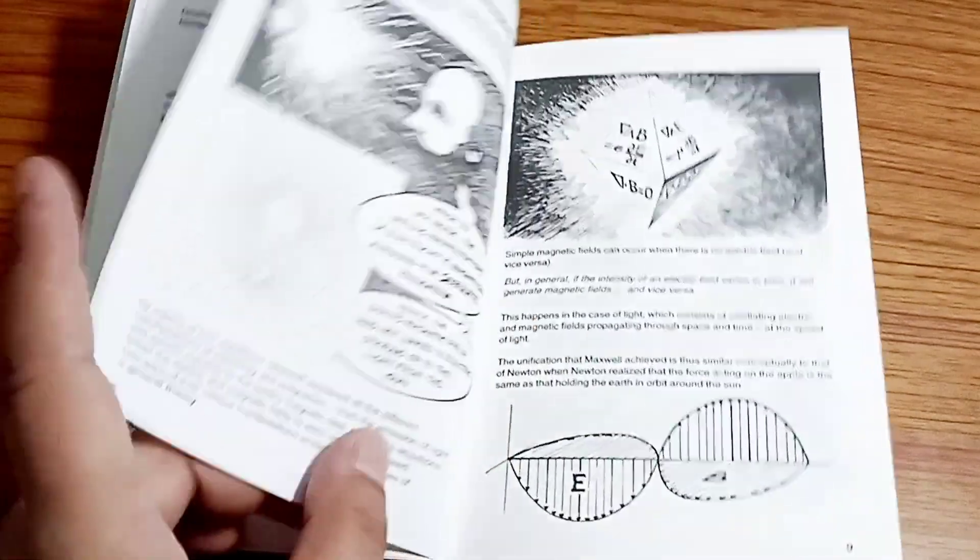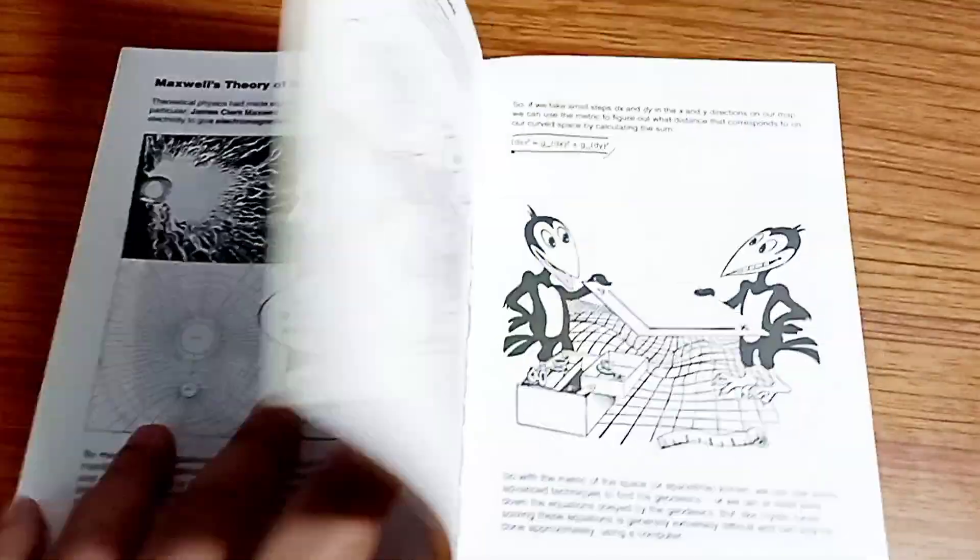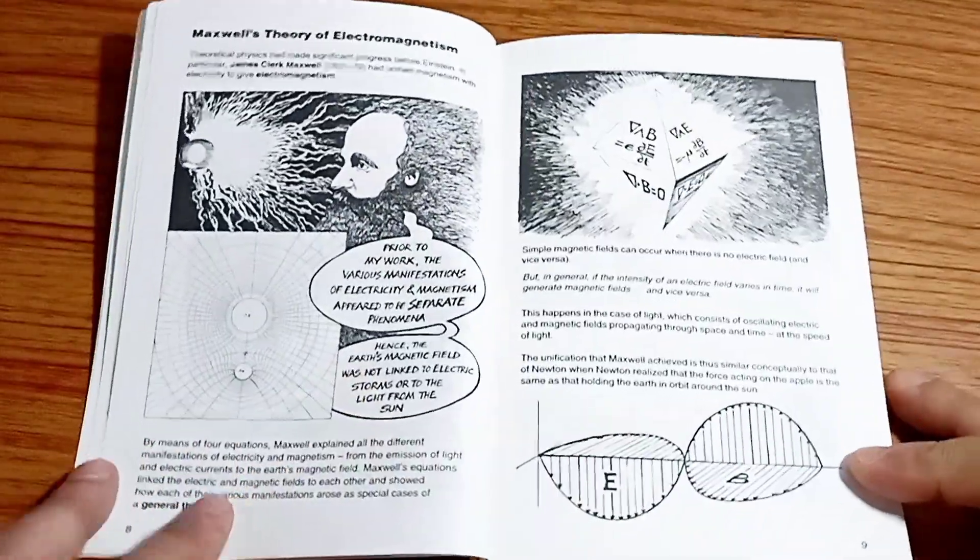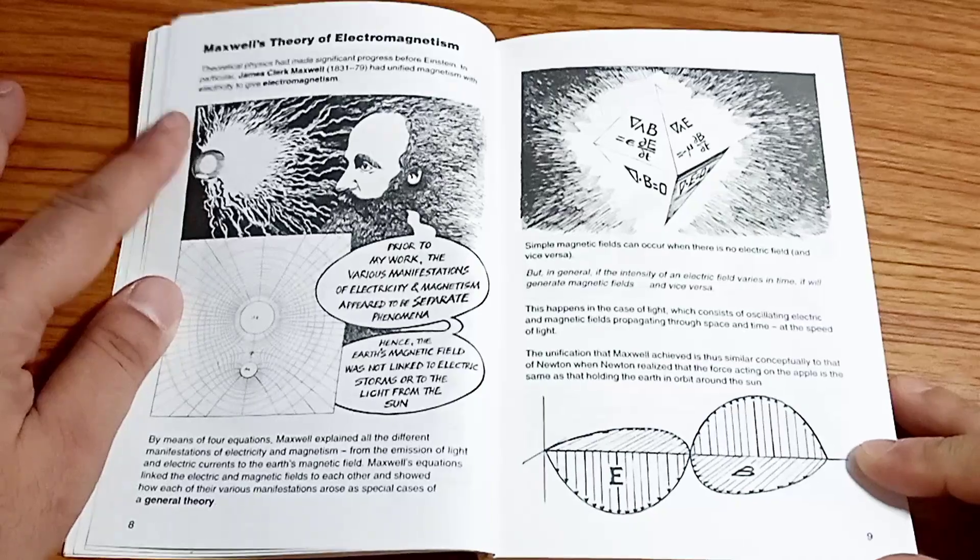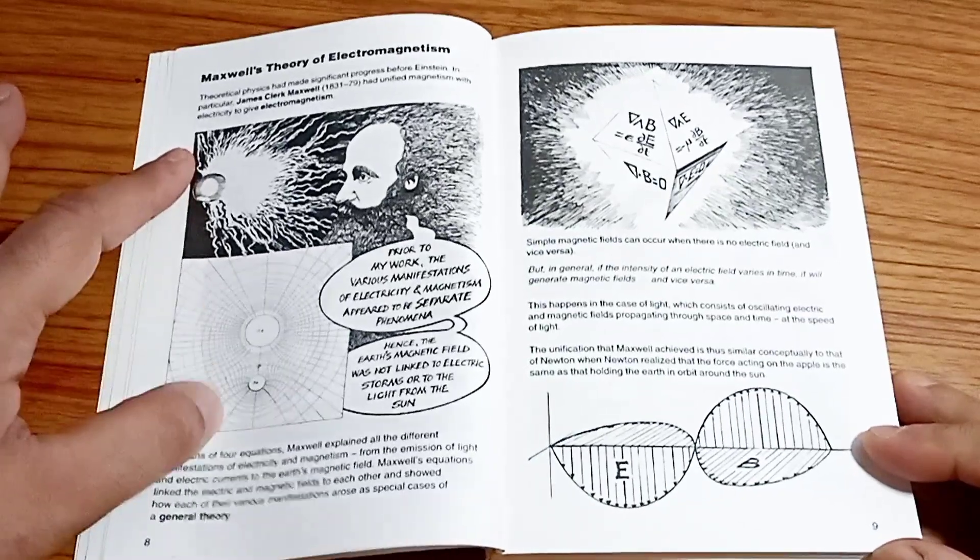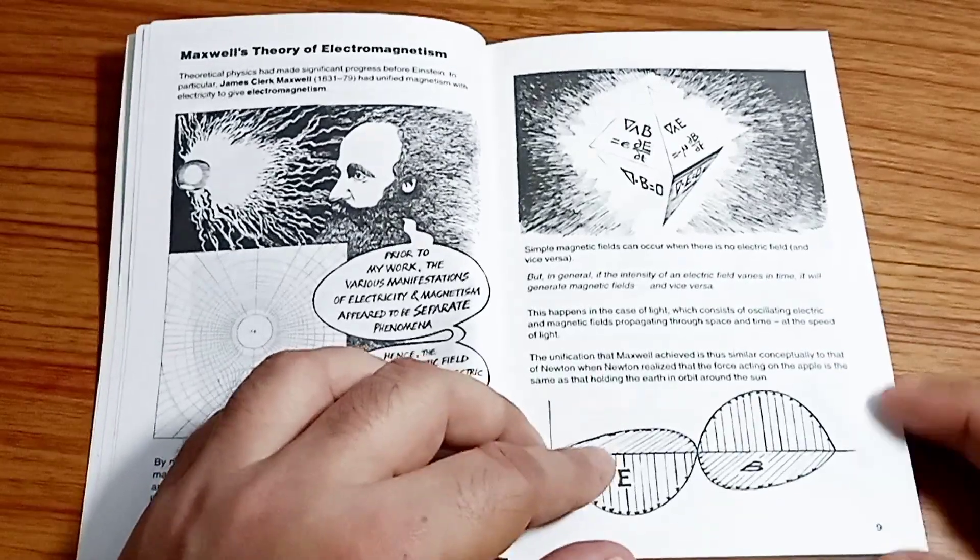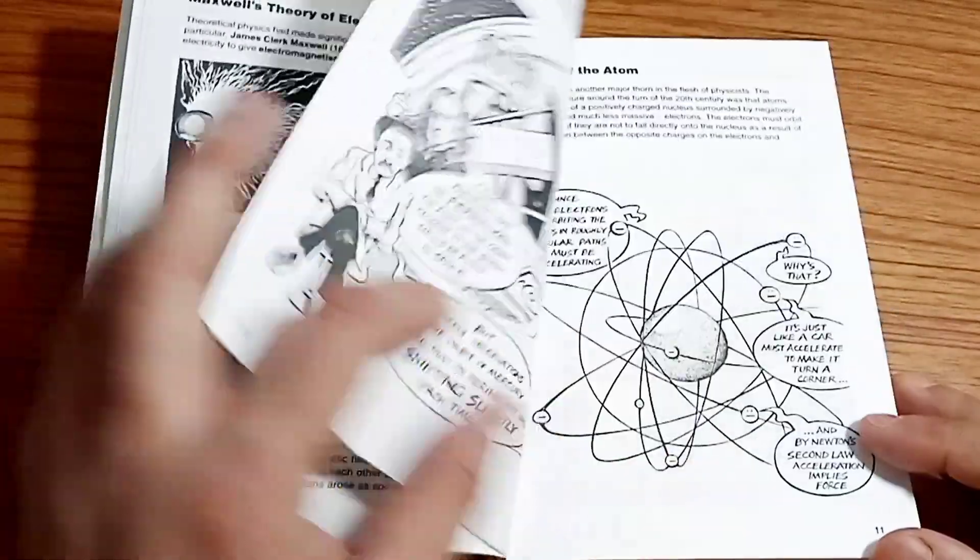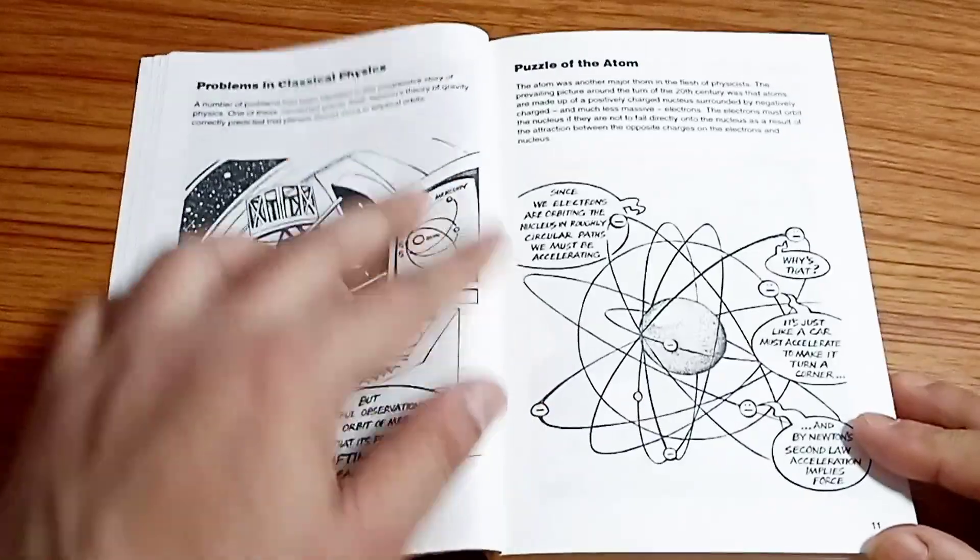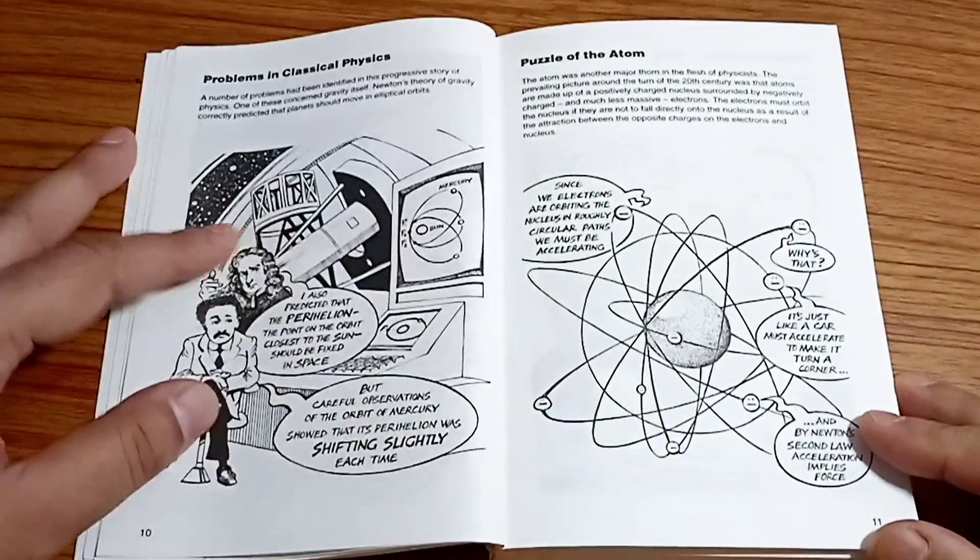And this is Nicholas Copernicus. And then it further shows examples of Maxwell's theory, right? So electromagnetism is being covered and you can see these equations of electromagnetism. This is the electromagnetic wave, electric and the magnetic wave going through that.